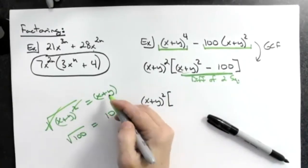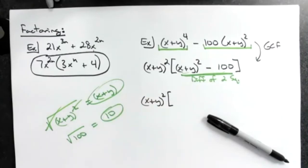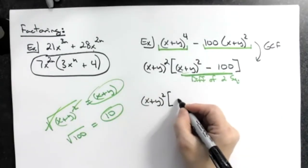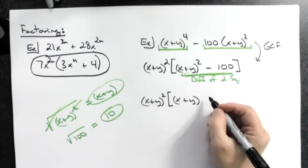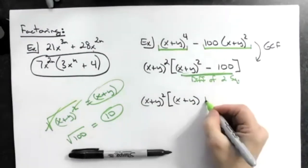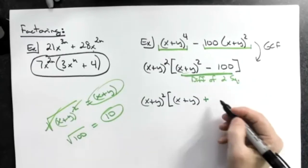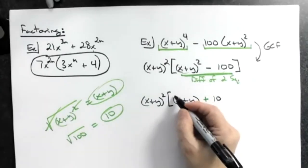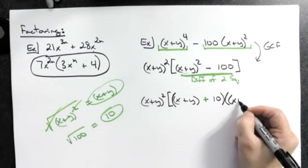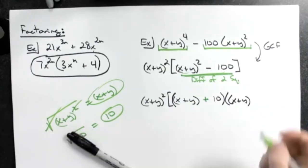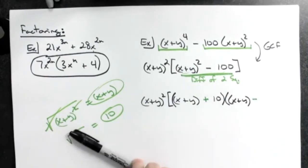And then we take these two things, write them with a plus sign, write them with a minus sign. So then this would be an x plus y, and I'm going to do this in a different color plus the 10. And then it's that quantity times the first one, x plus y minus 10.